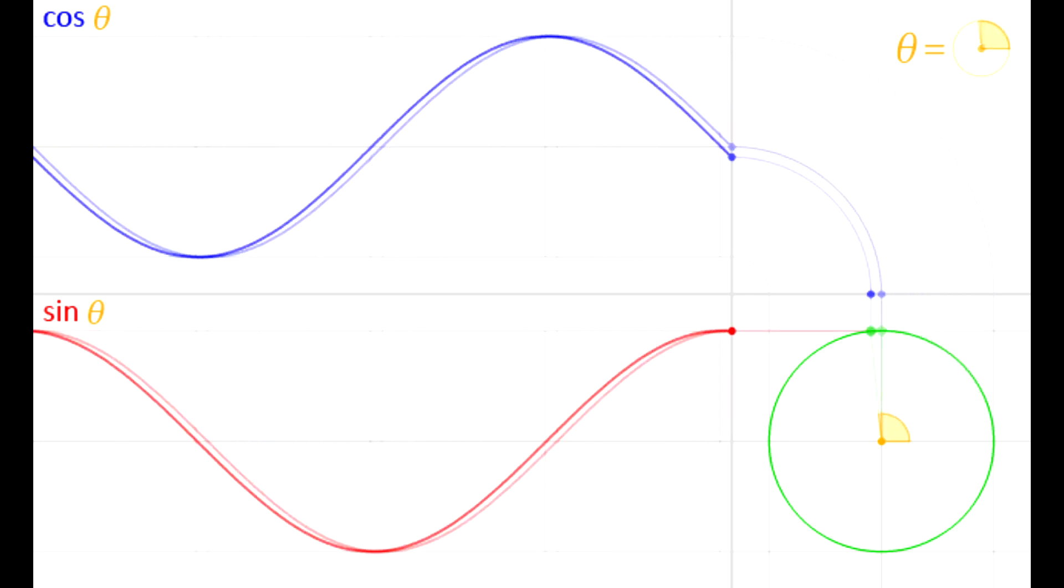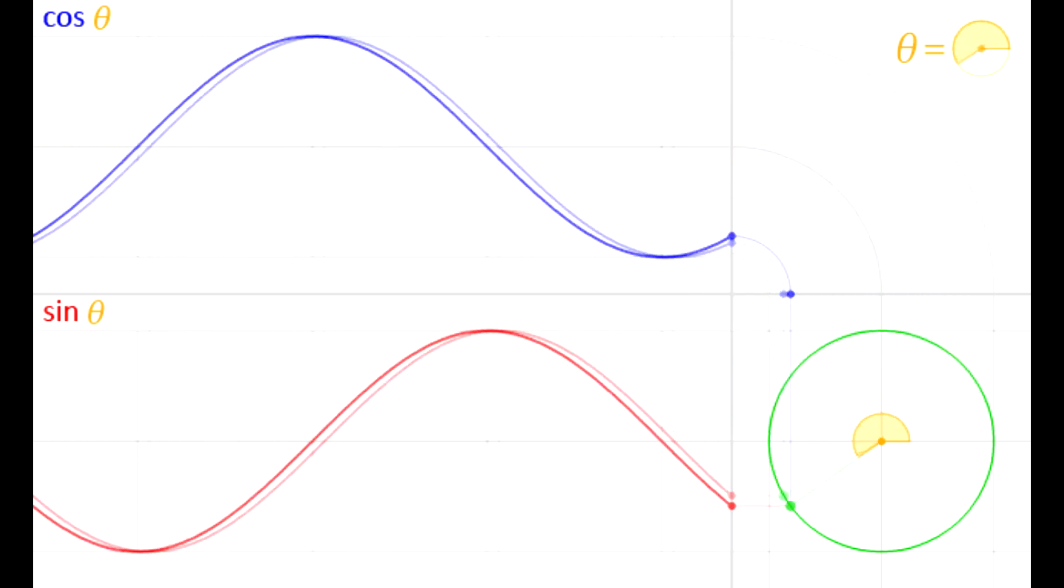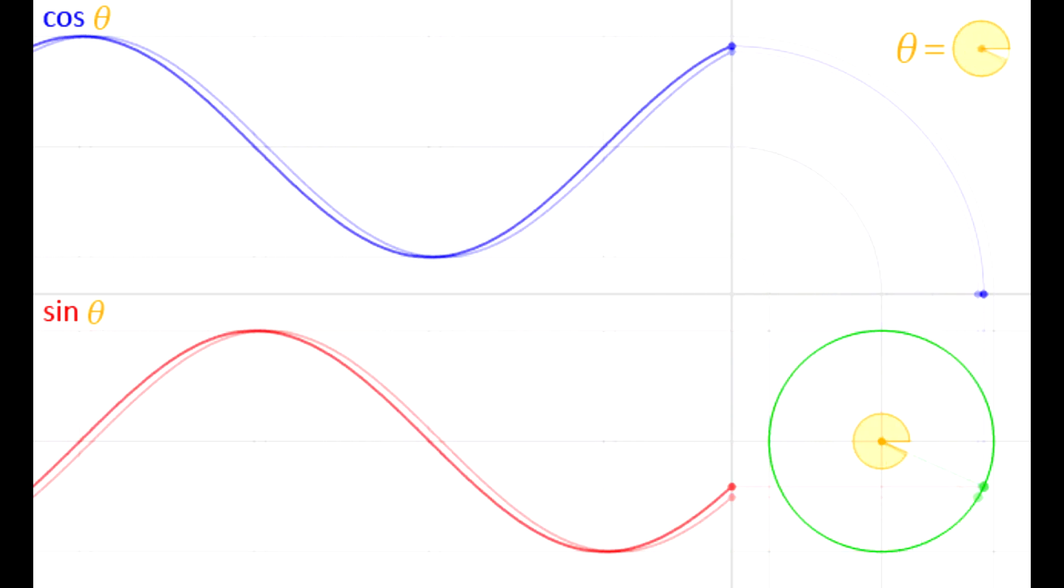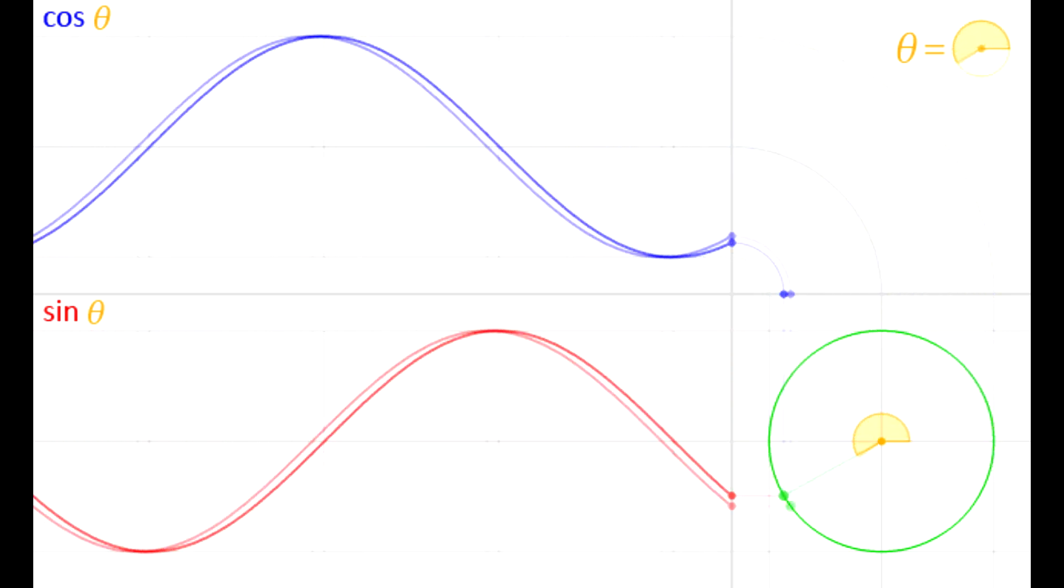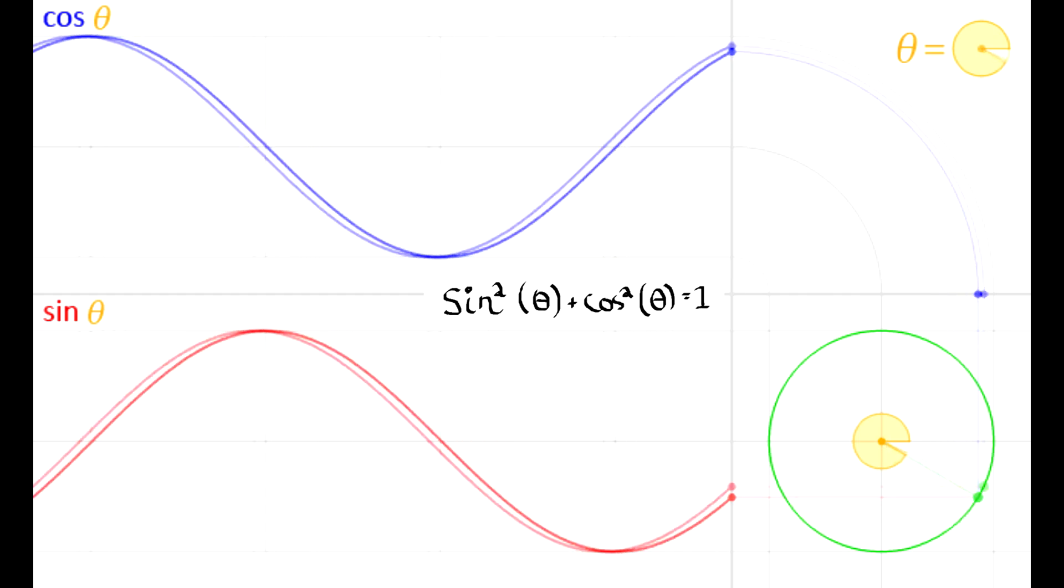As we saw with the animation involving sine and cosine, two waves that are 90 degrees out of phase with each other make a circle. They make a circle because the sum of their magnitudes are constant at any given time.